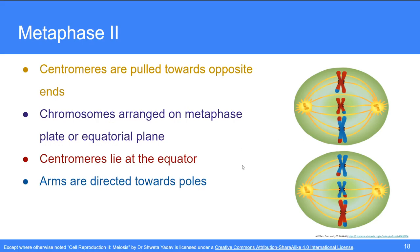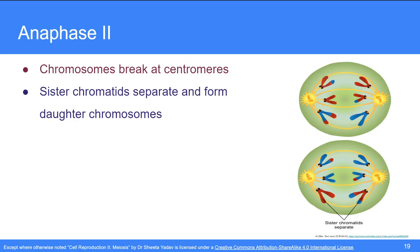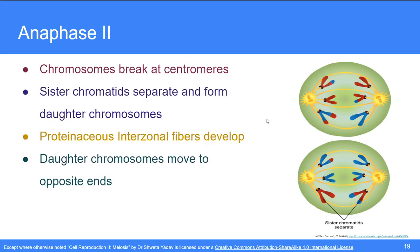In anaphase 2, the chromosomes break at the centromere, causing the sister chromatids to separate and form daughter chromosomes. Proteinaceous interzonal fibers develop between the daughter chromosomes and push them away from each other, just like in mitosis. The daughter chromosomes move to opposite ends of the cell and may be V, J, or rod-shaped depending on the position of the centromere, just like in anaphase of mitosis.